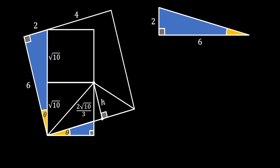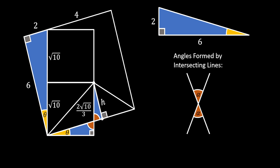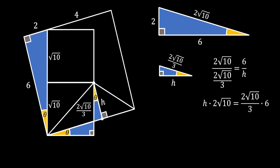We pull the height of the wanted triangle and label it h, forming another small blue shaded triangle. Using the rule that angles formed by intersecting lines are equal, the two acute angles of the two small shaded triangles are equal, making those triangles similar. Applying the rule of similarity — relating hypotenuses to bases — and simplifying 2√10 from both sides, we find the height h of the wanted triangle equals 2.